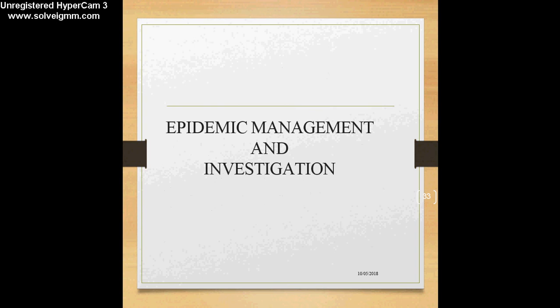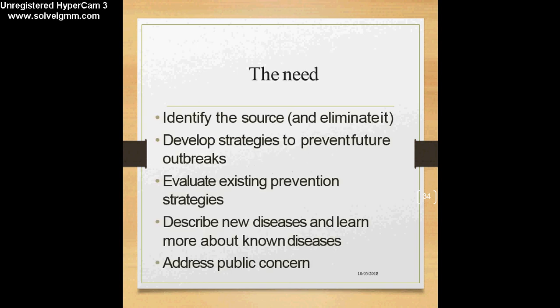Finally, we come to outlining the steps of epidemic management and investigation. First, why do we need to investigate an epidemic? The foremost rationale is to identify the source or place from which the epidemic has come, and once we identify it, our next step is to eliminate that source. Next is to develop strategies to prevent further outbreaks.